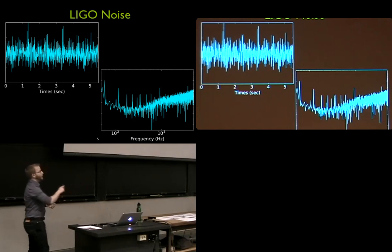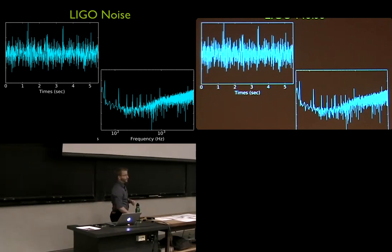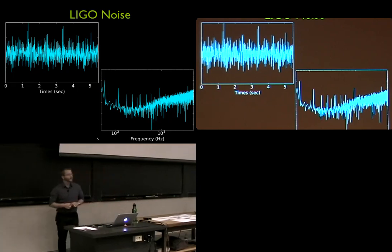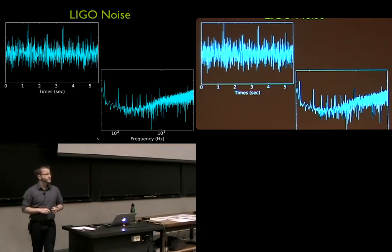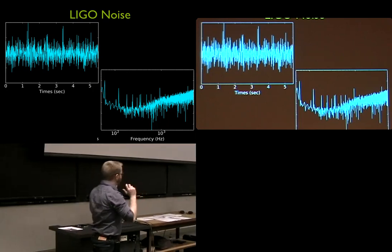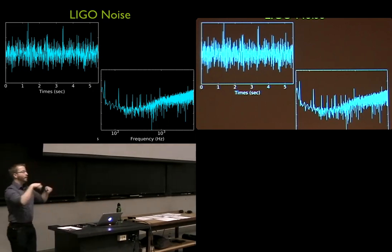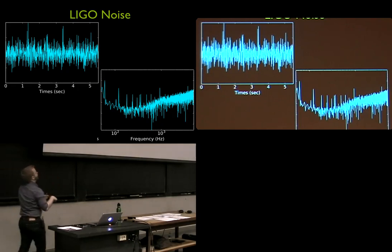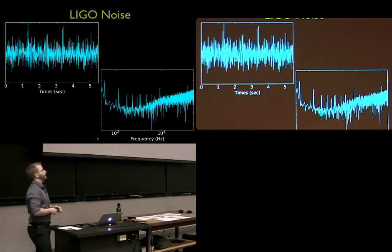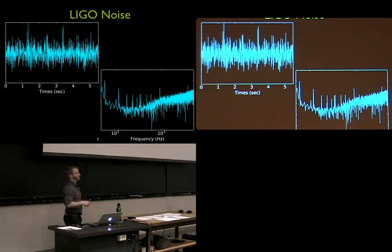The vertical axis is basically loudness — in sound terms, like decibels. In the middle frequencies, we're dominated by thermal noise. Our test masses, the mirrors at the end of the arms of the LIGO instrument, are suspended by fused silica fibers, which have thermal oscillations. There are also thermal oscillations in the surface of the mirror that add noise to the data — that dominates around 100 hertz or so. In the high frequency end, it's all statistics: counting the photons in the instrument and the uncertainty associated with that.